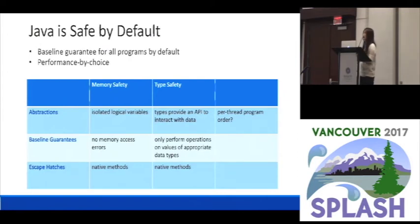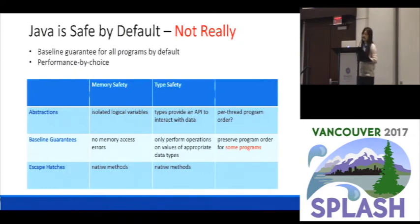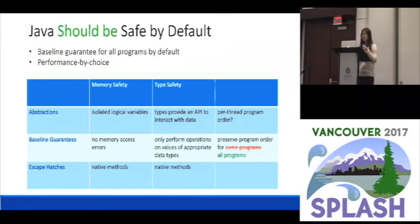Now think about the example I showed at the beginning. Here we have the abstraction of per-thread program order. This is a very important abstraction because, as I showed you, if you don't have it, you can have security vulnerabilities. So we should protect this kind of abstraction. If you follow the same idea of safe by default, we would want to preserve this abstraction and give some baseline safety guarantee for all programs by default. But this is not the case with Java today. Java only preserves this kind of abstraction and gives you this safety guarantee for some programs — the well-annotated ones. So if you don't do anything, you don't get safety. It's more like safe by choice, not safe by default.